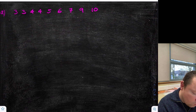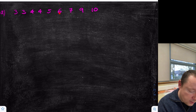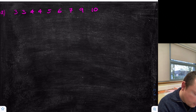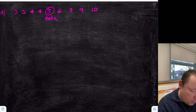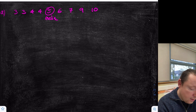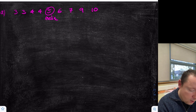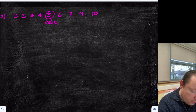I've already put the data in order and we need to find the middle. There are 9 values, so 9 plus 1 is 10, divided by 2 — the median happens at position 5. Counting 1, 2, 3, 4, 5 — there's my median. The upper quartile is the middle of the upper half, so I'll draw a line there — that's my upper quartile.